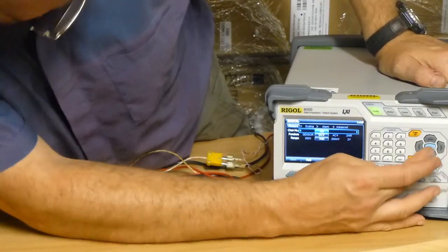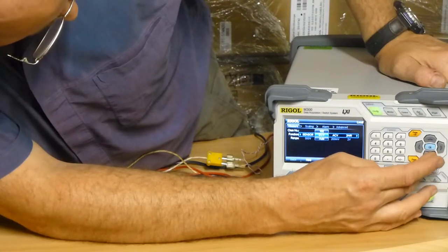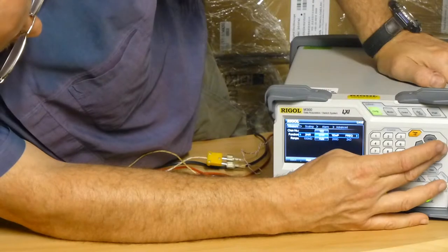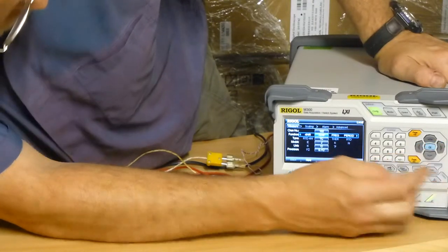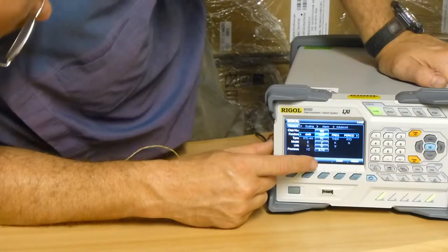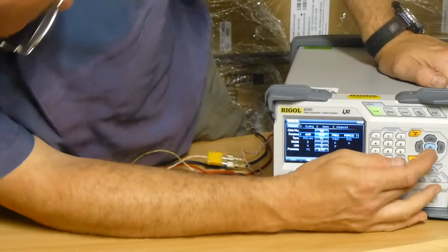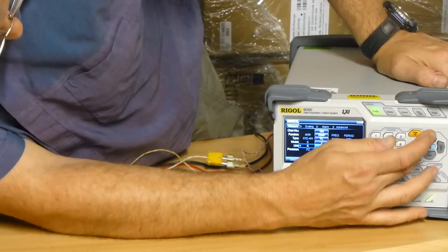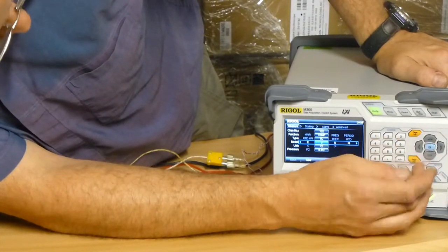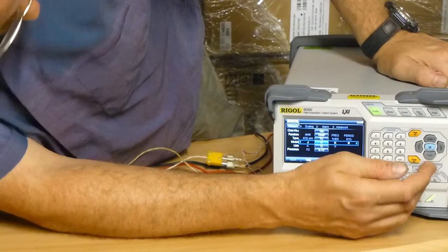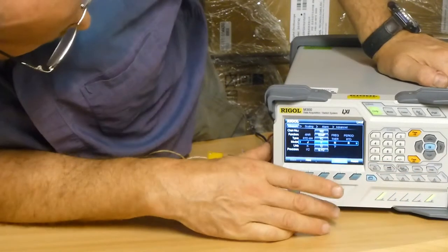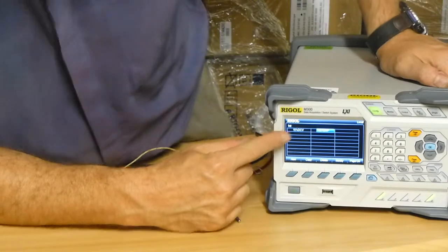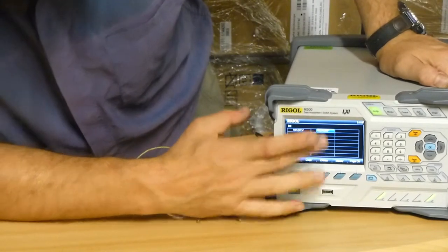I'm going to add a second channel, and this time I'm going to ask it to measure temperature. It gives me a choice of thermocouples, and I'm going to say I want to measure it as a K-type thermocouple. And there we go, done. So you can see on the front panel that we have DC volts and temperature.